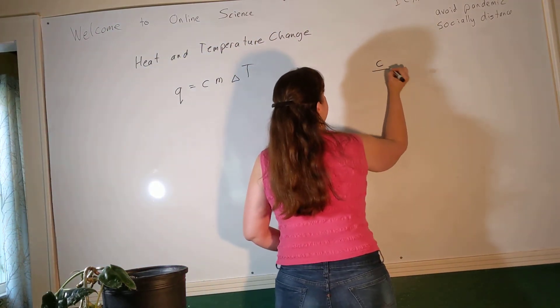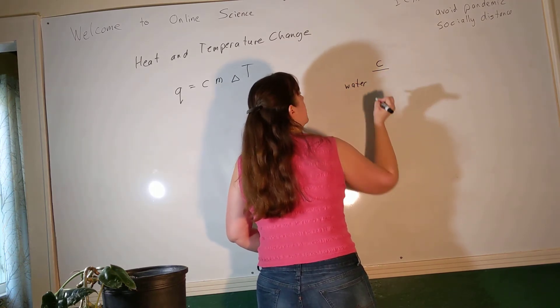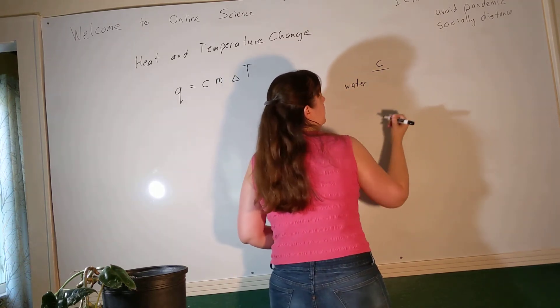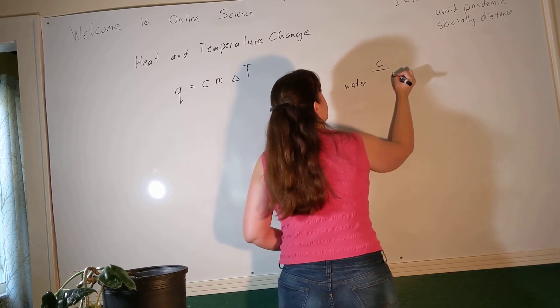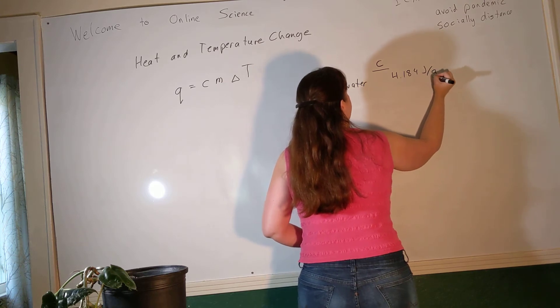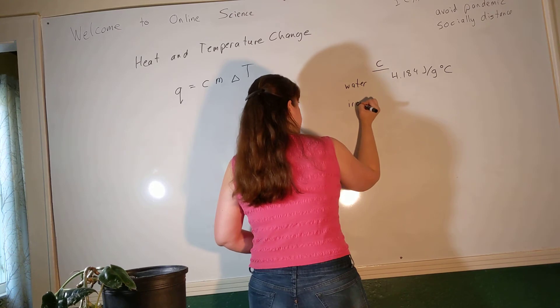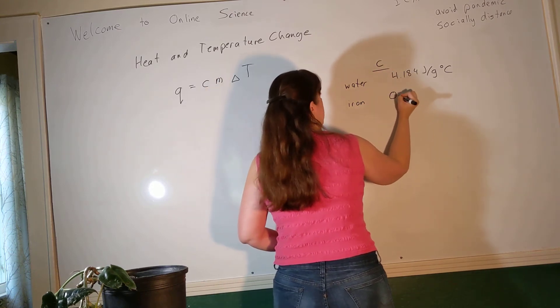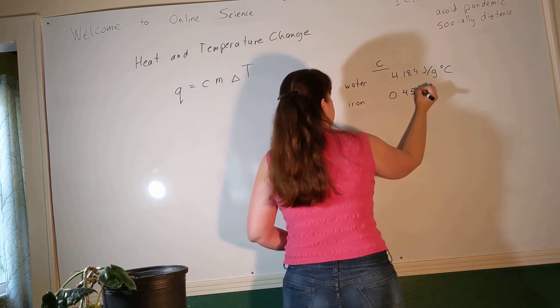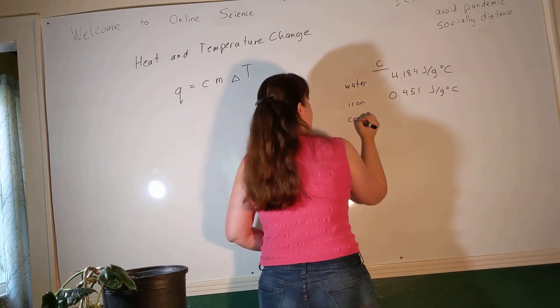The one that we will use the most, and you may end up memorizing without meaning to, is water's. Water-specific heat capacity is 4.184 joules per gram degrees Celsius. Water-specific heat capacity is really big. Other substances, especially metals, have really low specific heat capacities.